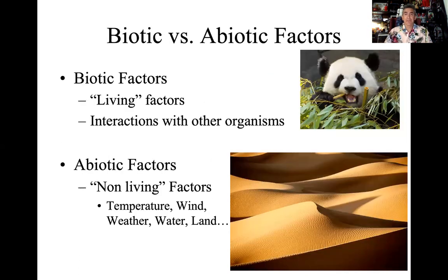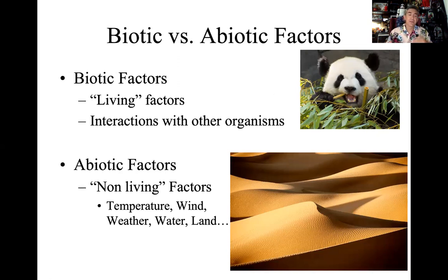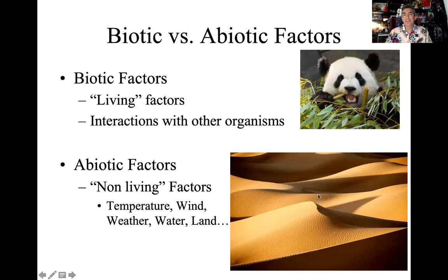Here we get into some vocabulary. We know 'bio' means life, so biotic factors are any living factors that the organism will interact with. Here we have a panda eating leaves — leaves are alive as a plant is alive, so the living plant interacting with the living panda is a biotic type of interaction. If you get dropped in a very desolate, harsh desert, you would be interacting with the heat and the sand — that would be a non-living interaction. We call that an abiotic factor.